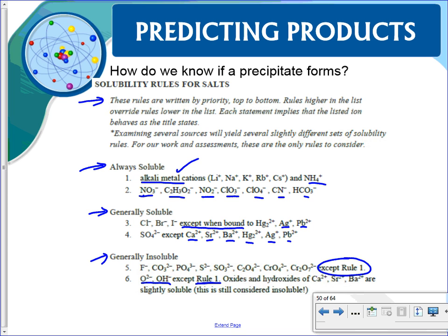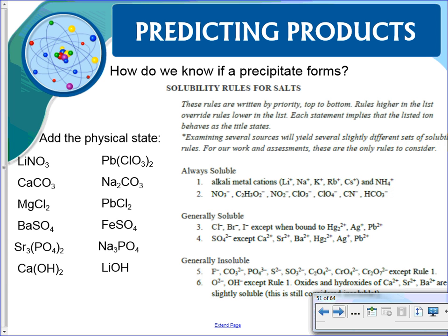Slightly soluble compounds we will still consider insoluble. To determine physical state: lithium nitrate — lithium is an alkali metal, so it's aqueous. Calcium carbonate — carbonate tends to be insoluble, and calcium is not in Group 1, so it forms a solid. Magnesium chloride — chlorides tend to be soluble and Mg is not an exception, so it's aqueous.